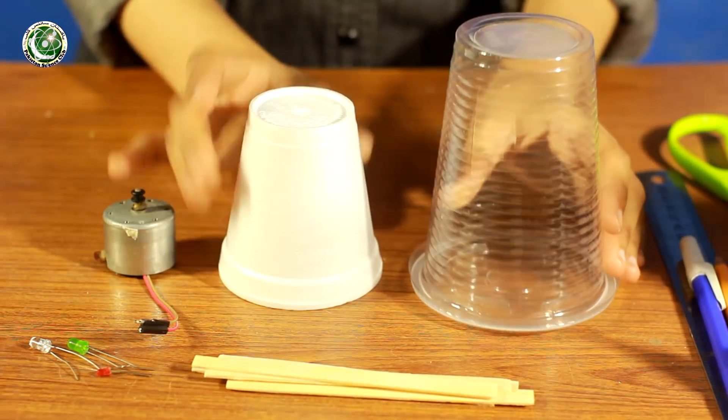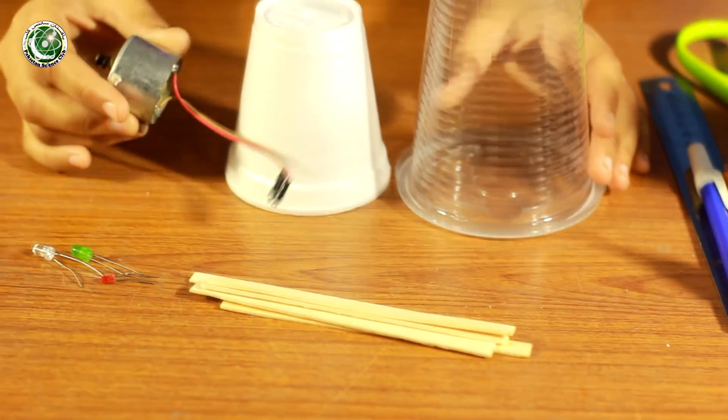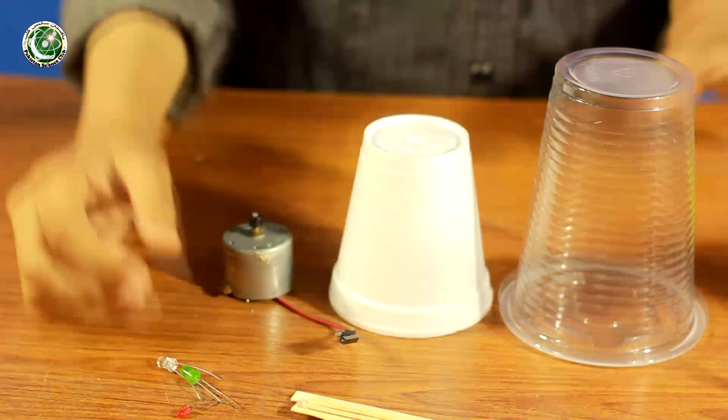For this project, we have two disposable glasses, a large size and a small size, some popsicle sticks, DC motors, which you can easily remove from any toy car, LEDs, and some tools.